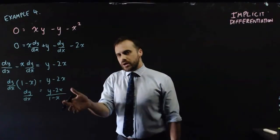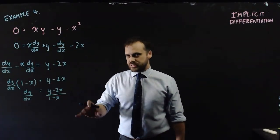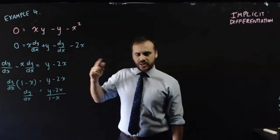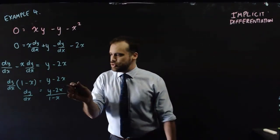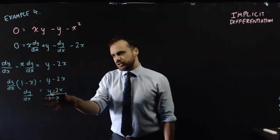dy/dx equals (y minus 2x) over (1 minus x). Now, this one, along with the other three examples, they do have small restrictions here. You should look at the bottom of your fraction and say,